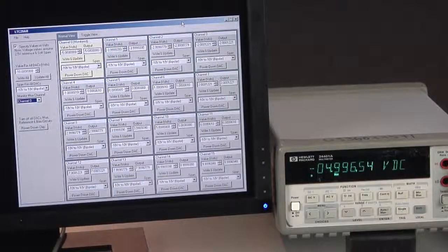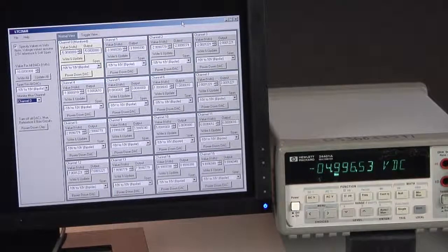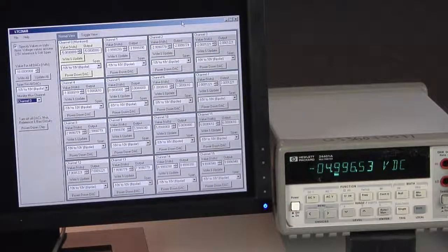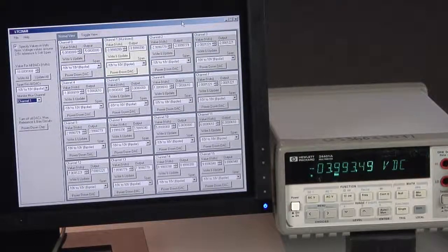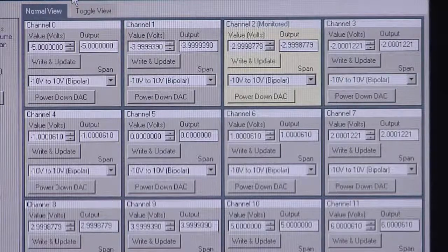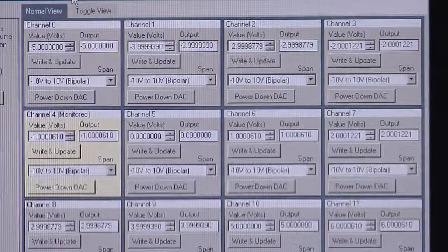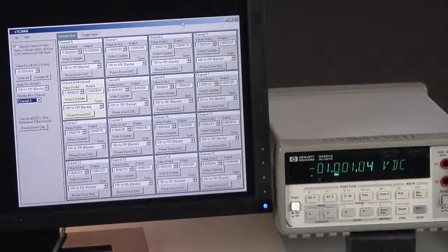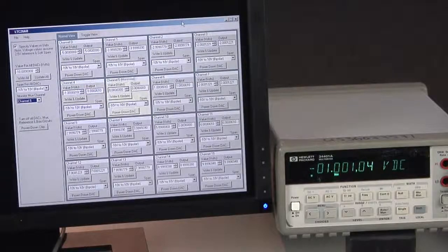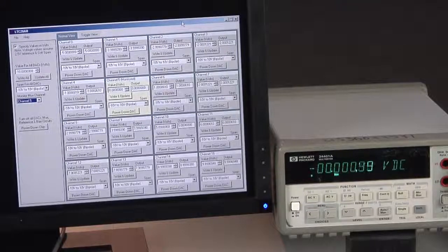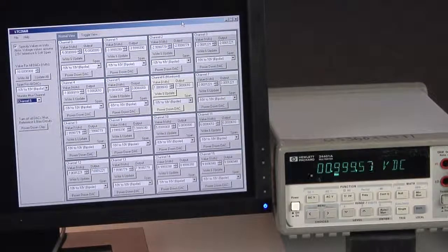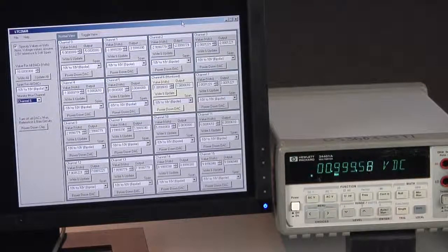An Agilent 34401A meter is measuring the MUX output. Scrolling through the monitor MUX channels allows each channel to be measured by the meter for this demonstration, which could be an onboard ADC in your application. Note the accuracy of the levels. Without performing any calibration, no channel is more than 15mV outside of the expected value over the 20V range.